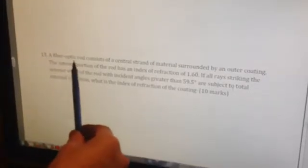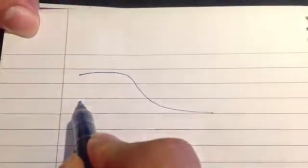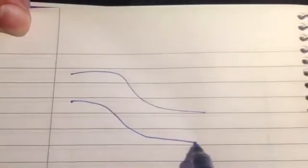A fibre optic rod consists of a central strand of material surrounded by an outer coating. So let's draw this to understand what that means. A fibre optic is like a long wire, except the only difference is this doesn't carry electricity, it carries light.